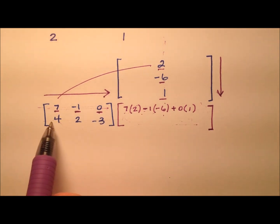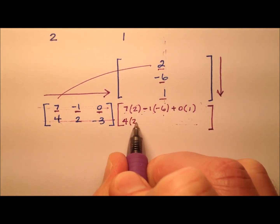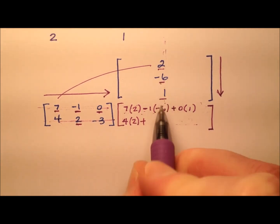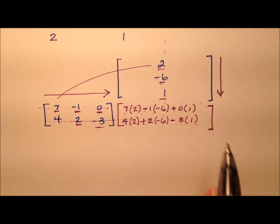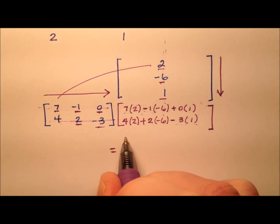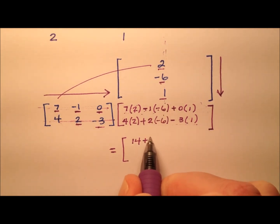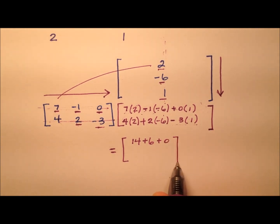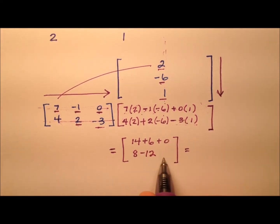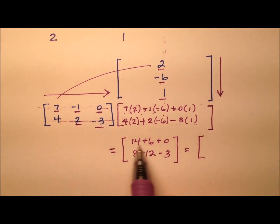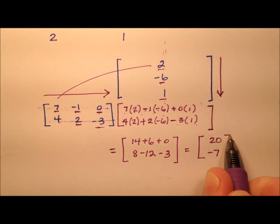The entry below it comes from the second row paired with the same column. So: four times two, plus two times negative six, and the last entry negative three times one. So what do we have? Seven times two is fourteen, negative one times negative six is positive six, and plus zero. And four times two is eight, two times negative six is negative twelve, and negative three times one is negative three. So the product matrix simplified becomes this two by one whose entries are twenty and negative seven.